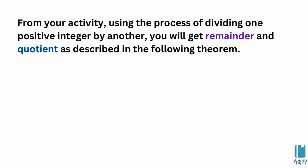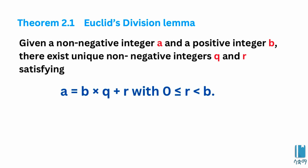Theorem 2.1 — Euclid's Division Lemma. Given a non-negative integer a and a positive integer b, there exists a unique non-negative integer q and r satisfying this condition: a is equal to b times q plus r.